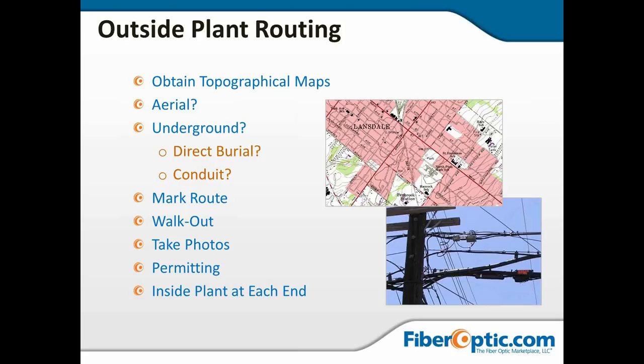We must also consider permitting — rights of way, pole attachment permits, make-ready — potentially requiring new poles if we're the low man in communication space and clearances aren't met. As outside plant designers, we also have a little inside plant on each end, since it's still ours until we reach the transition box. We need to plan how we make entry into buildings at both ends of the fiber run.